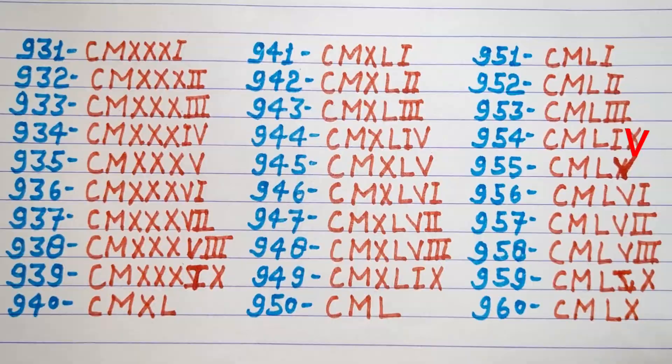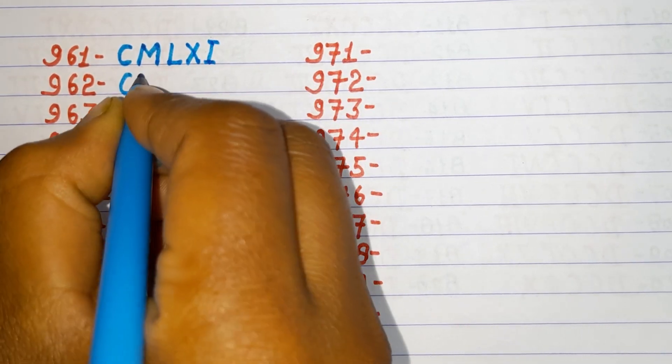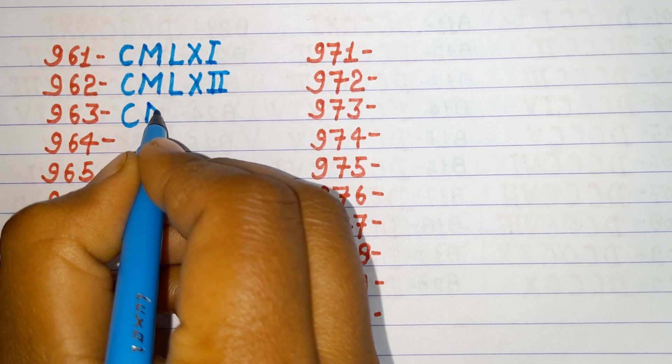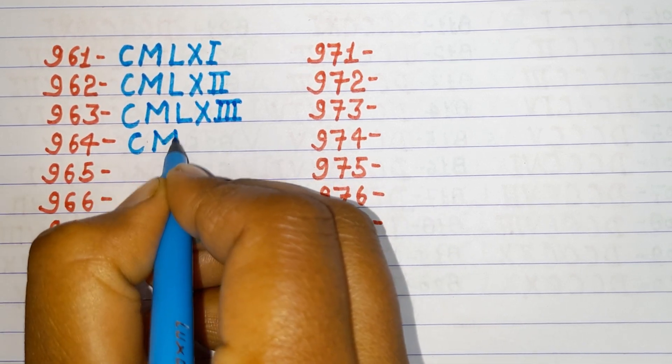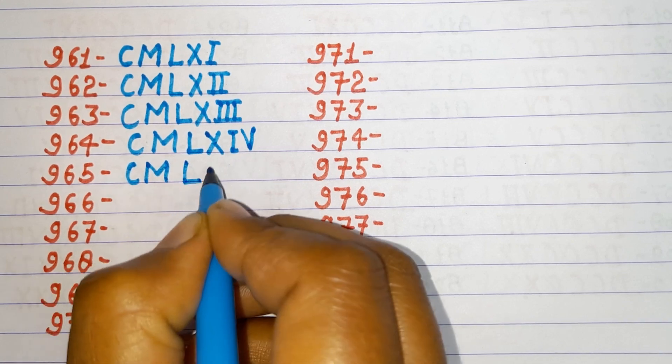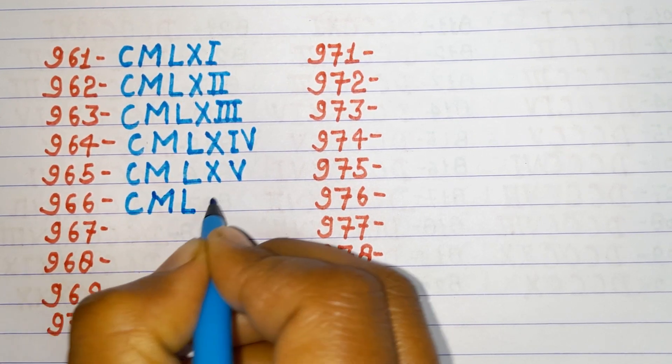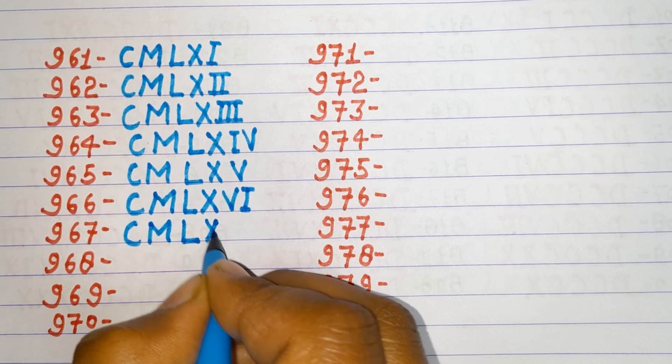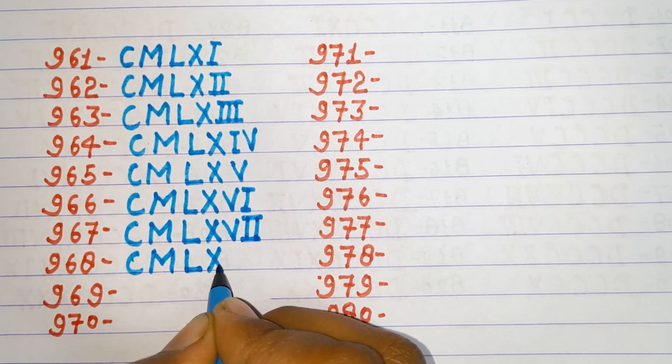960 CMLX, 961 CMLXI, 962 CMLXII, 963 CMLXIII, 964 CMLXIV, 965 CMLXV, 966 CMLXVI.